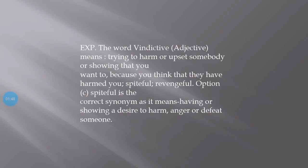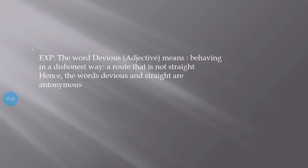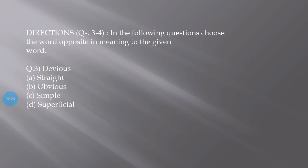Now in the following questions, choose the word opposite. We've seen synonyms, now we'll look at antonyms. The word is devious. The opposite word options are straight, obvious, simple, and superficial. The word devious means behaving in a dishonest way, a route that is not straight. So the antonym, the opposite word, is straight - meaning someone who is honest.